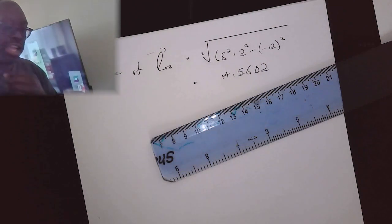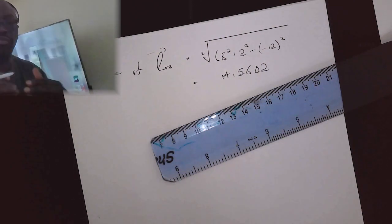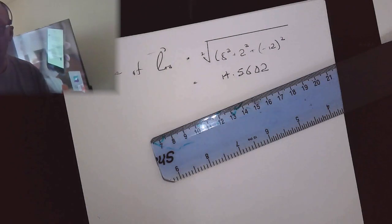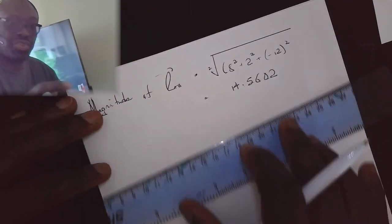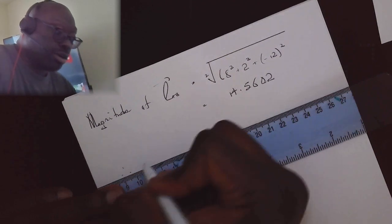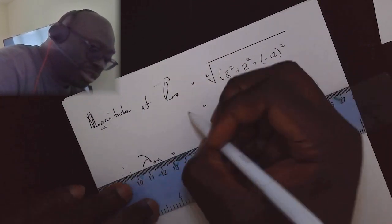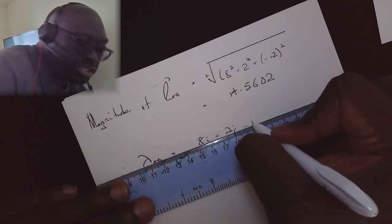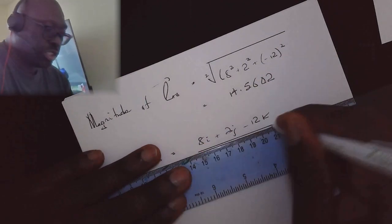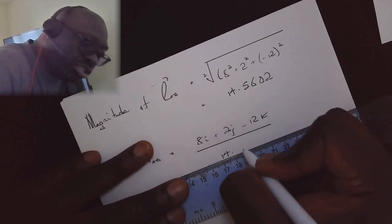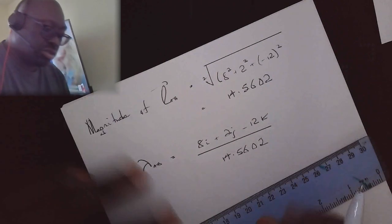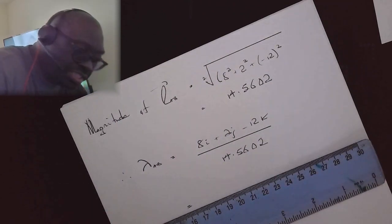For accuracy when computing values leading to the final result, I advise keeping four decimal places, then rounding to two decimal places for the final result. Therefore, the unit vector lambda AB equals 8i plus 2j minus 12k all over its magnitude 14.5602. We can further break that down to isolate each component of the vector.